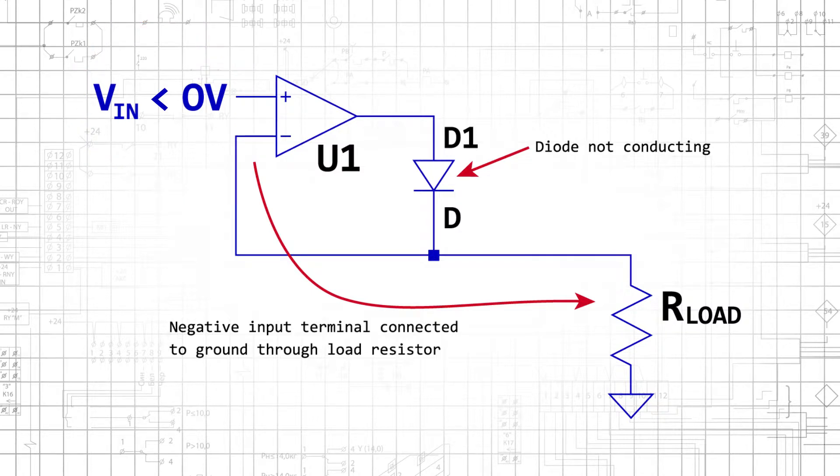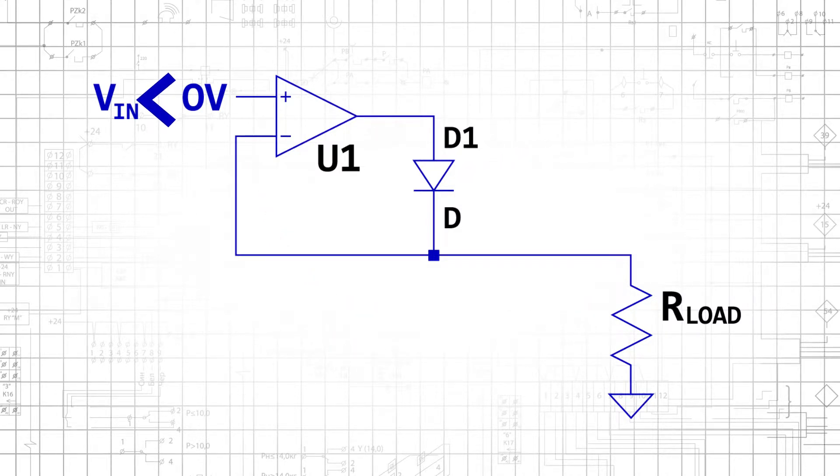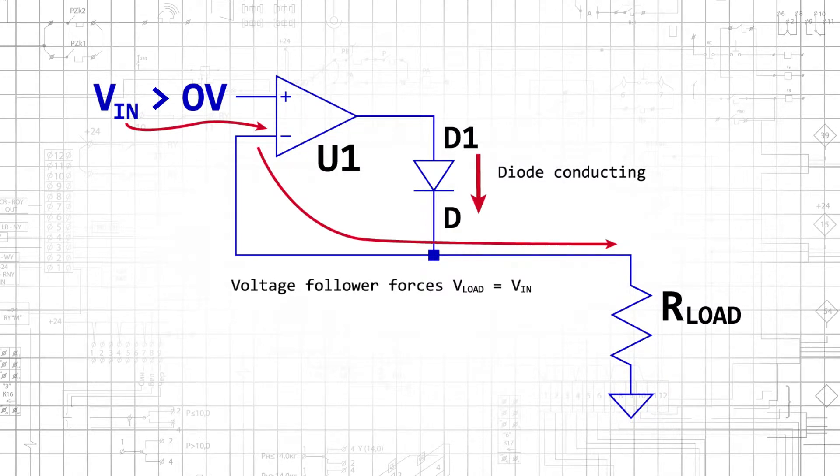If the input voltage is below zero volts, the diode is an open circuit, and the inverting input terminal is connected to ground through the load resistor. As soon as the input voltage goes above ground, there is a positive differential voltage between the two input terminals, and the op amp's high open loop gain results in a large output voltage.